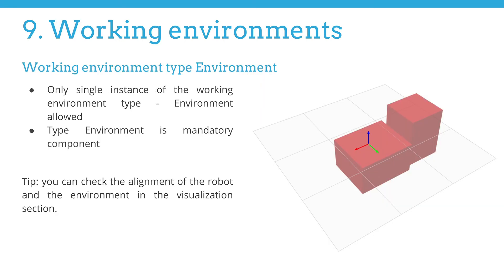The first working environment to discuss here is the type environment. This CAD model should contain a mounting construction. Please pay attention to the coordinate system. The robot will be mounted in a virtual environment at the origin of the drawing. Also note that only a single instance of environment is allowed. This type is a mandatory component. You will be able to check the alignment of the robot and the environment in the visualization section. This will be, however, the subject of the next session.